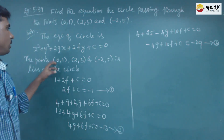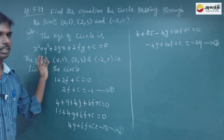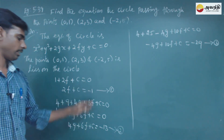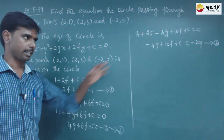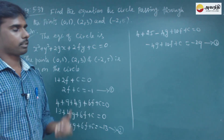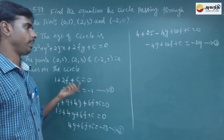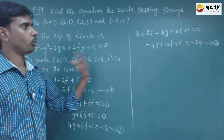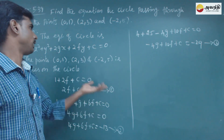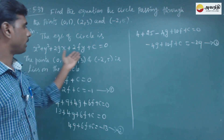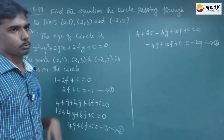We have substituted the three points into the general equation and obtained three equations. We now need to solve for the three unknowns g, f, and c.